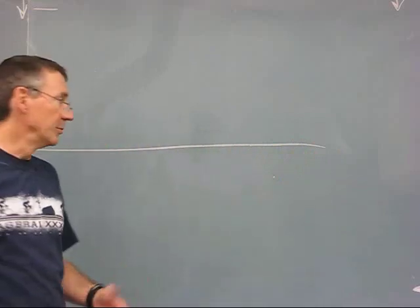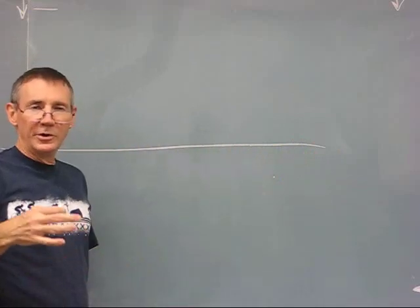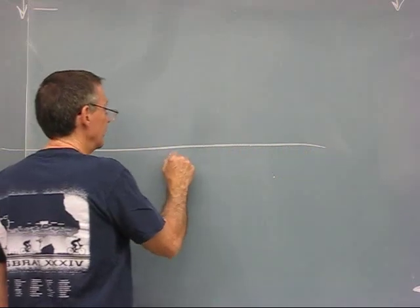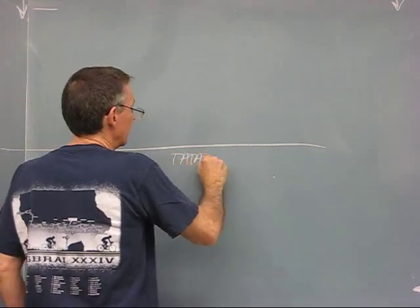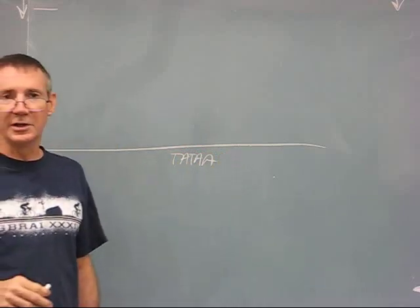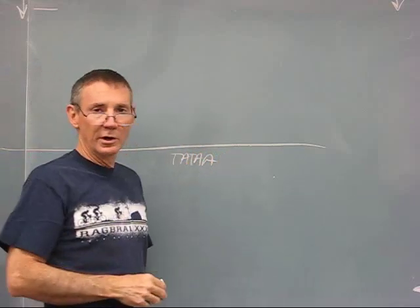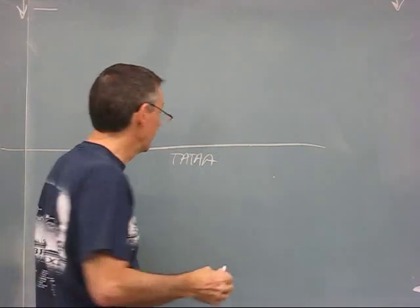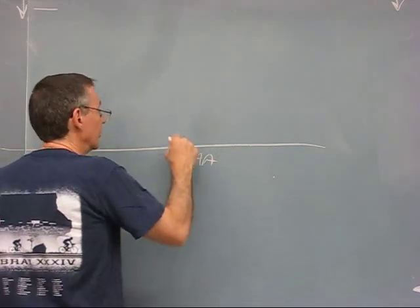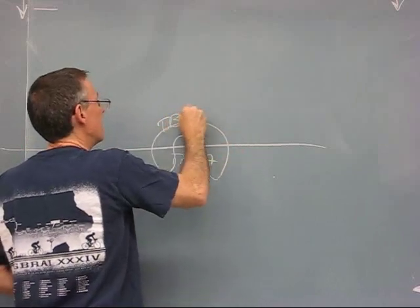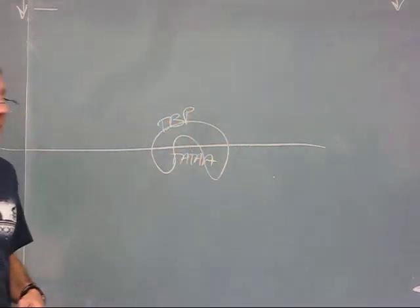First of all, if we look at a basal promoter, the one element that is almost universal in eukaryotic promoters is the TATA box. It has the consensus sequence TATAA. And this is the site where a protein binds called TATA binding protein. So TATA binding protein binds, abbreviated TBP.